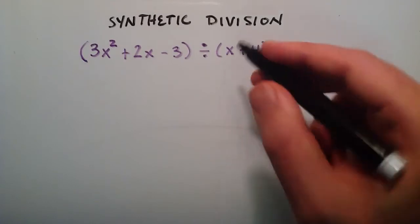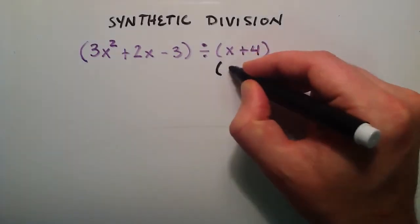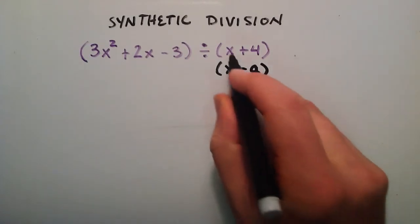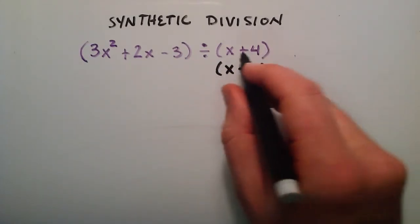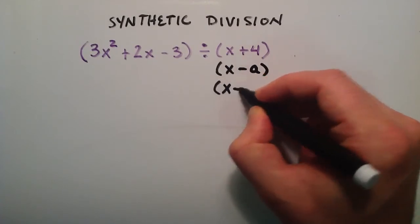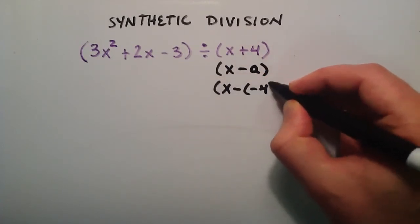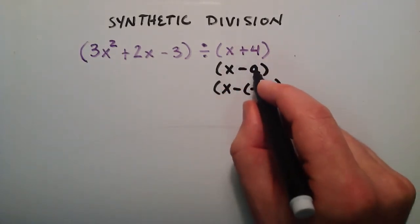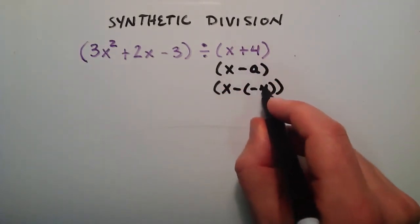For synthetic division to work, we have to have this part right here in the form of x minus some number a. And we have x plus some number, so we have to change this so that it's minus some number. We can just say x minus a negative 4. And if we subtract a negative 4, it's the same thing as adding a 4. So therefore, our a is equal to negative 4.